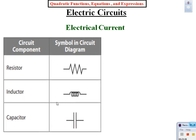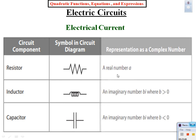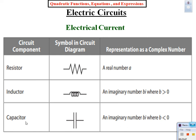This can be converted into mathematics. A resistor can only give us a positive real number. An inductor translates into an imaginary number where B is greater than zero — meaning positive — so for an inductor, the number is going to be an imaginary positive number. A capacitor: B cannot be more than zero, it has to be less than zero. So a capacitor is going to give us a negative imaginary number.